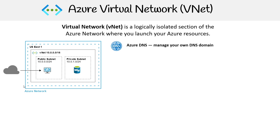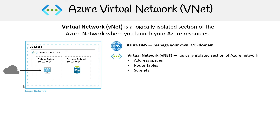You have Azure DNS, which manages your DNS domain. Then you have the VNet itself, and underneath that it'll have address spaces, route tables, and subnets.